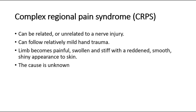Next, complex regional pain syndrome, which can be related or unrelated to a nerve injury, and can follow relatively mild hand trauma. The limb becomes painful, swollen, and stiff, with a reddened, smooth, shiny appearance to the skin. The cause is unknown.